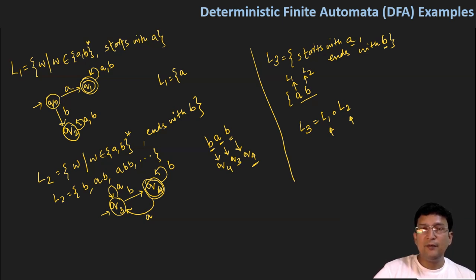So if I'm saying something like A concatenation B, this means that I'm talking about a string, let's say a string of type XY, where X is the part of A and Y is the part of B.